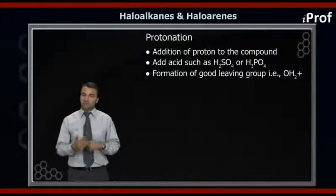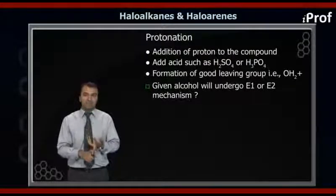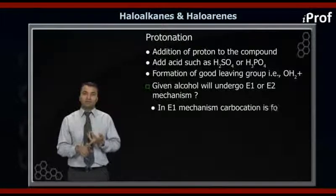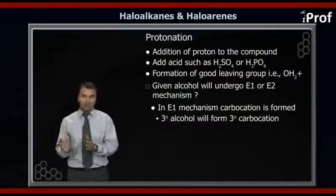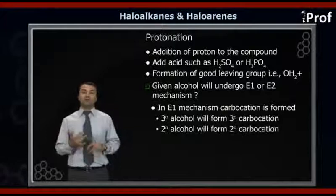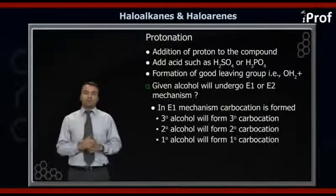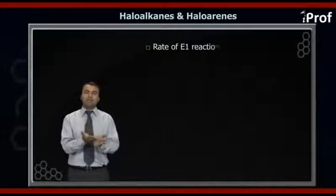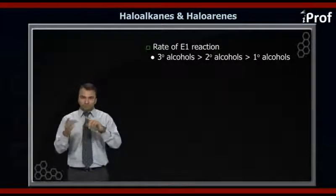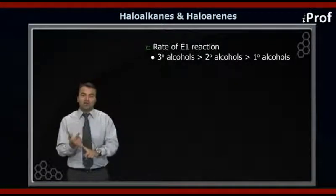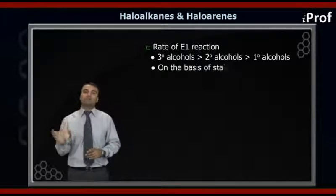The question comes: will the alcohol undergo an E1 mechanism or an E2 mechanism? As we can see clearly in the mechanism of E1, a carbocation formation is there. That means a 3° alcohol will form a 3° carbocation. Similarly, a 2° alcohol will form a 2° carbocation and a 1° alcohol will form a 1° carbocation. So we can say that the 3° alcohol will undergo E1 reaction fastest, then the 2° alcohol at a slower rate, whereas the 1° alcohol will undergo the slowest — based on the stability of the carbocations.